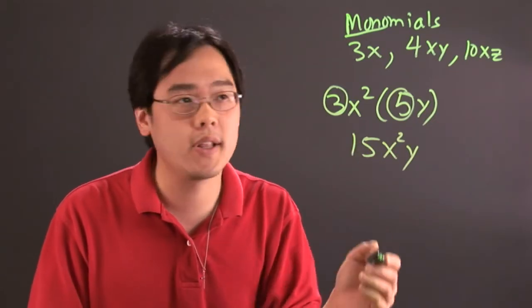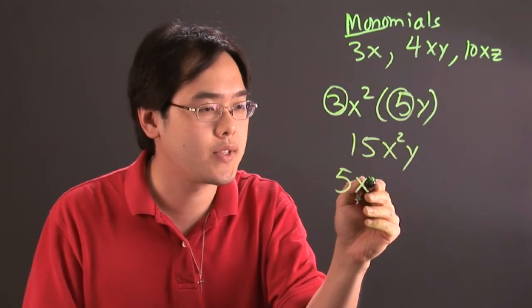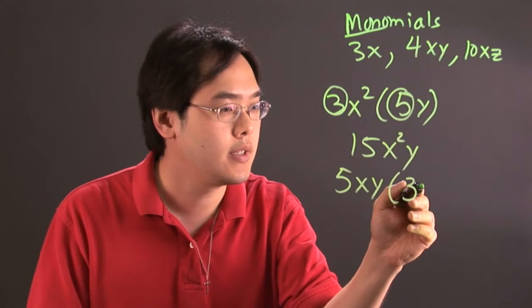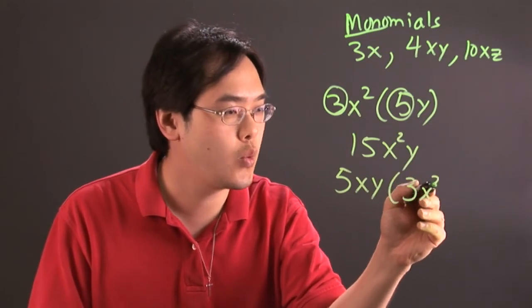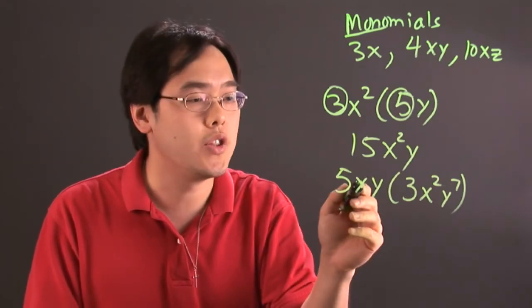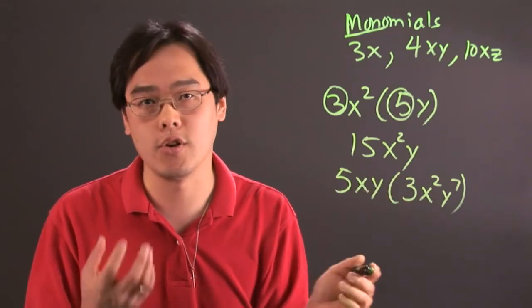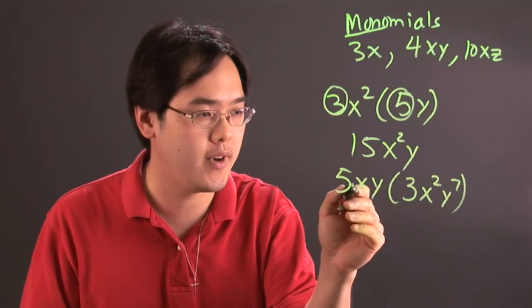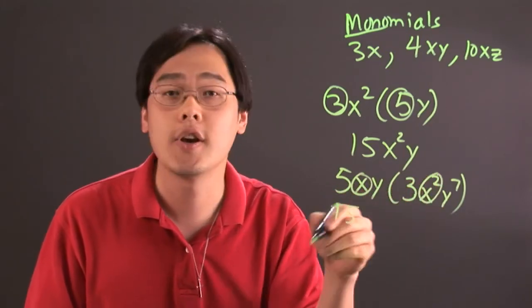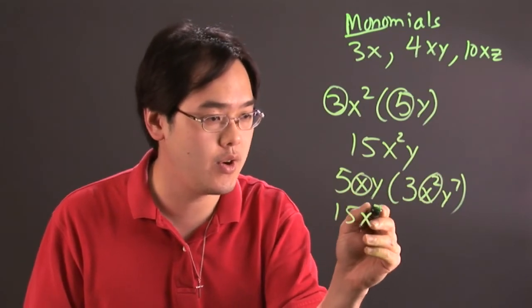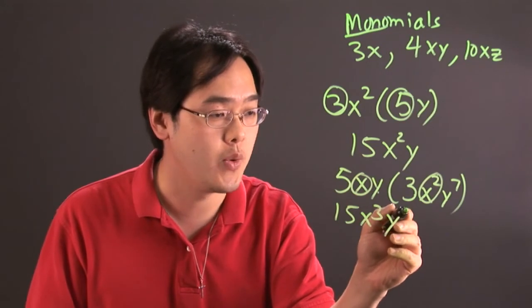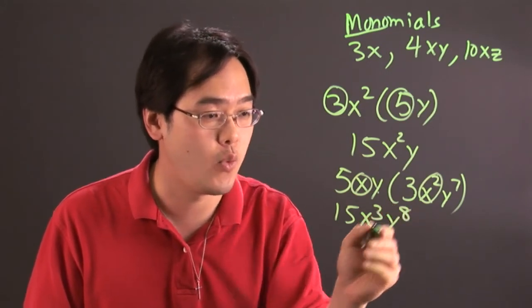But if you have something like 5xy times 3x squared y to the 7th, then you would be in business because the bases are the same. So for example, 5 times 3 is 15. x times x squared - you add those exponents, so this will be x to the 3rd. And then y times y to the 7th - you add the exponents there, and you have y to the 8th.